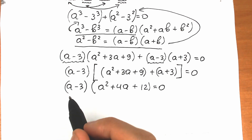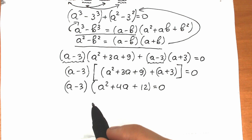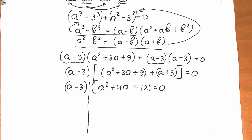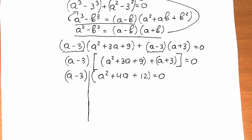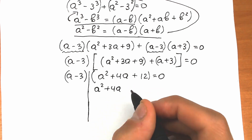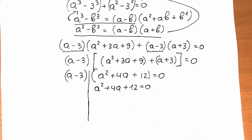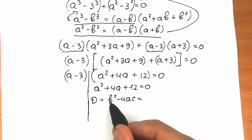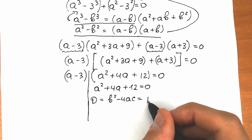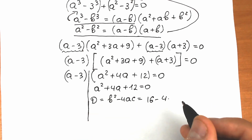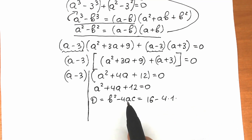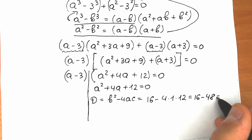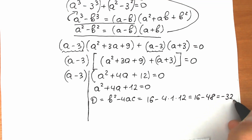A product equals zero when either factor equals zero. Starting with the second factor: a² + 4a + 12 = 0. Let's find the discriminant: b² - 4ac = 4² - 4(1)(12) = 16 - 48 = -32. The discriminant is negative, which means we have complex roots.